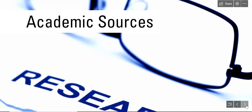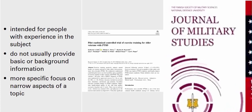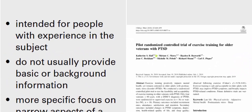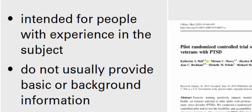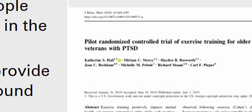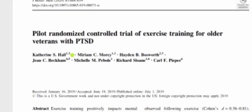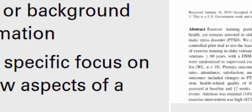Academic sources are those that are intended for people who already have knowledge or experience in a subject area. Typically, these sources will not provide you with the basic information on the topic. The authors or creators assume that you already know the commonly accepted facts, definitions, history, theories, and research related to the general subject area.